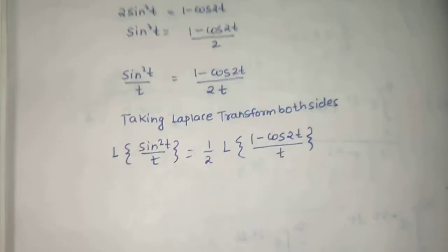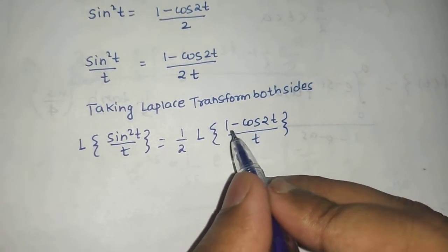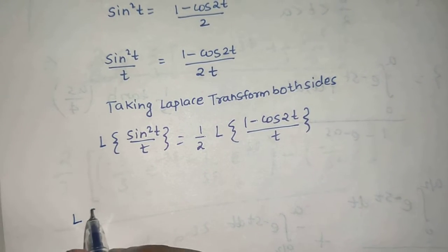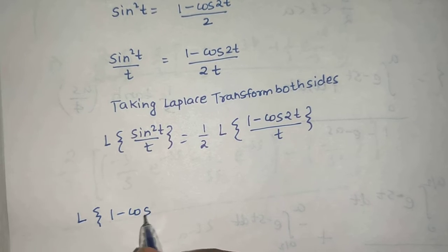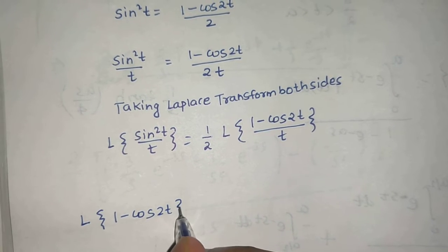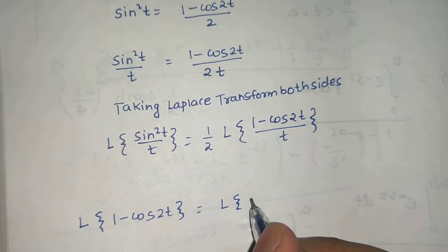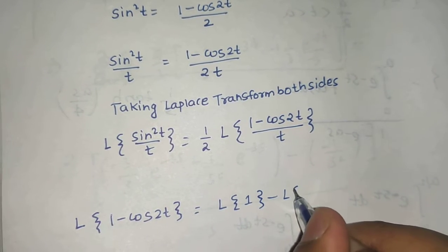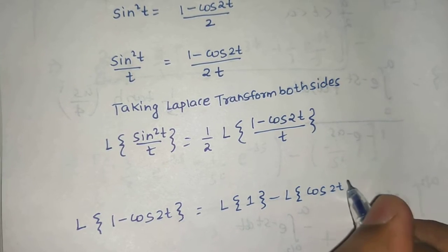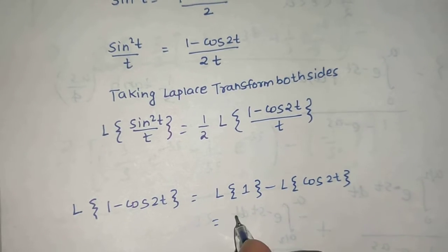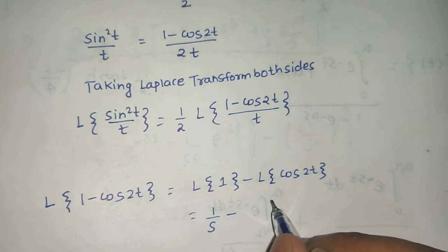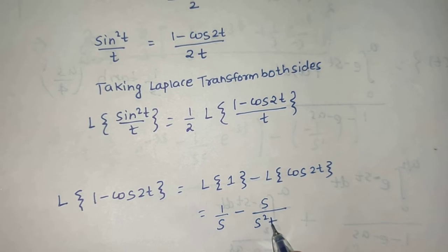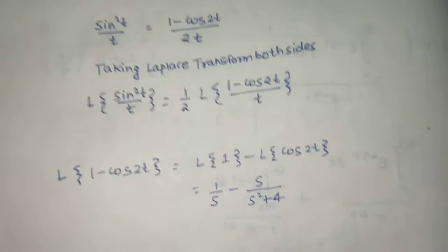Now we can find the Laplace of 1 minus cos 2t. Laplace of 1 is 1/s, and Laplace of cos 2t is s divided by s squared plus a squared. Here a is 2, so a squared is 4, giving us 1/s minus s/(s² + 4).